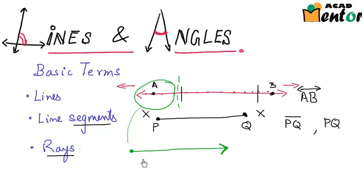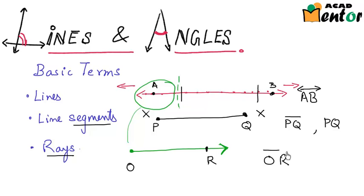Finally, how do I name a ray? If the end point is called O and a point on it is known as R, then this ray can be named as OR with an arrow pointing towards R, so that it is extendable on the side where point R is. This was about lines, line segments and rays.